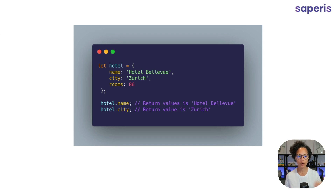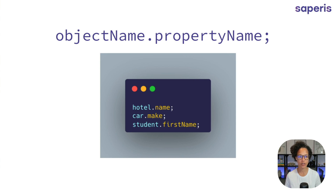Storing properties and values in an object is all nice and fine, but most likely you will also want to get access to that information. We do so by writing the object name, dot, and then the property name. Here we see three examples. So it would be, if we have an object of hotel, hotel dot name. If we have an object of car, car dot make, or student dot first name. Always first the object name and then the property name.